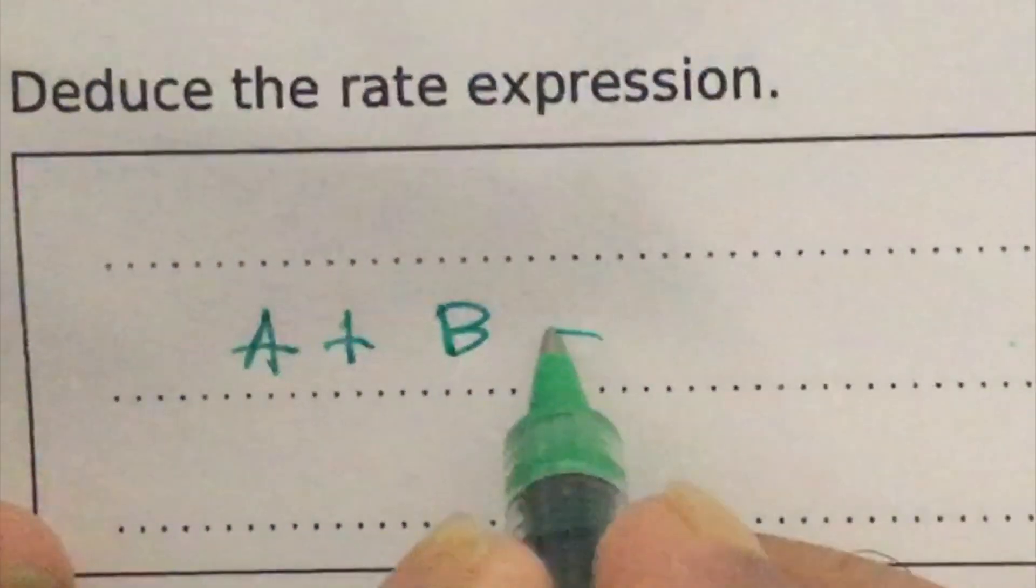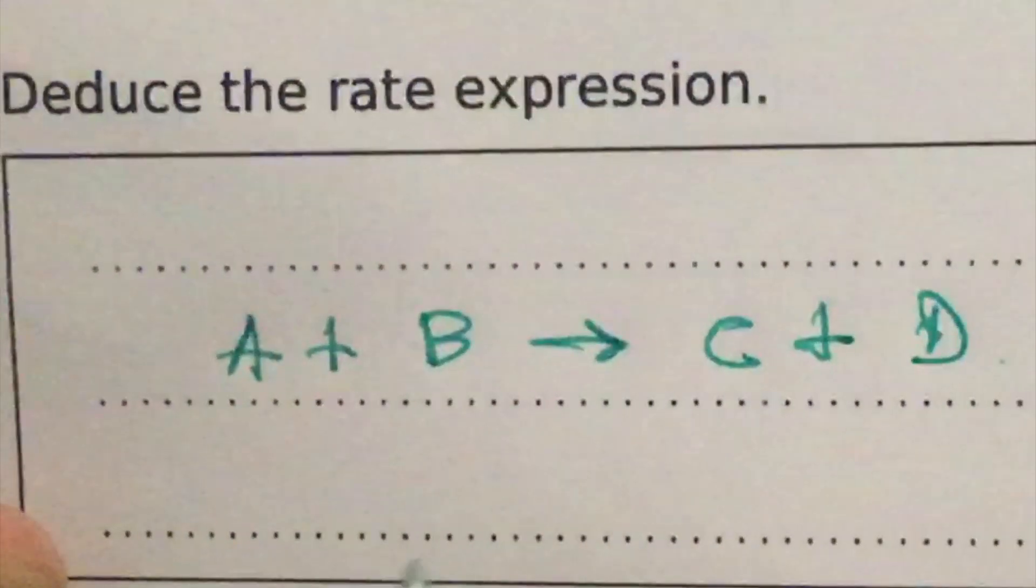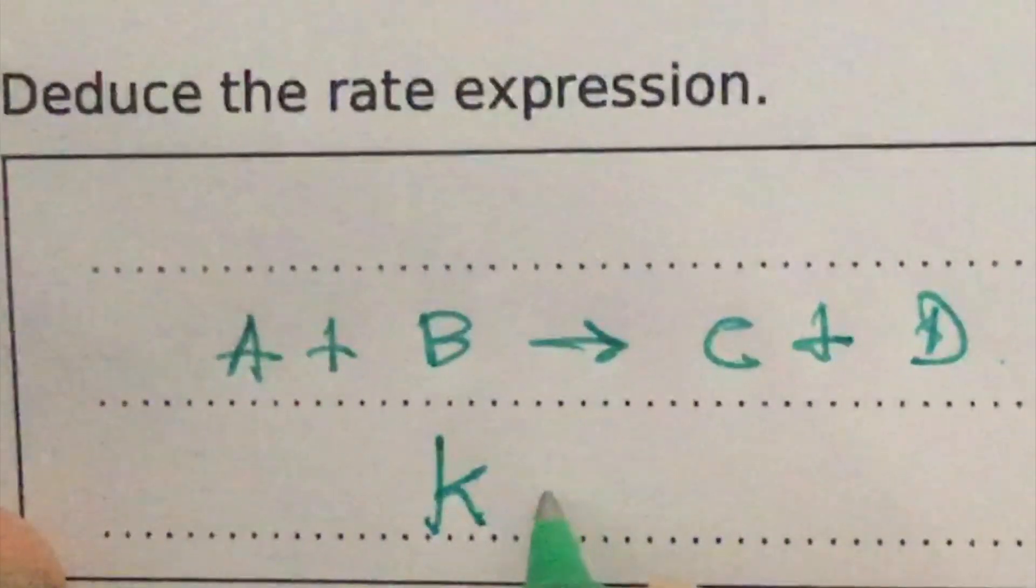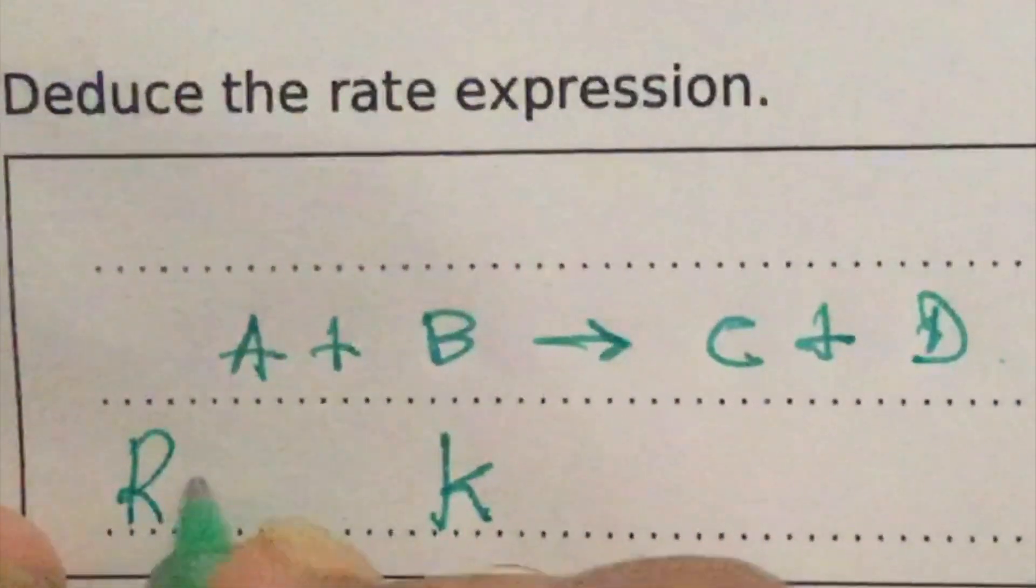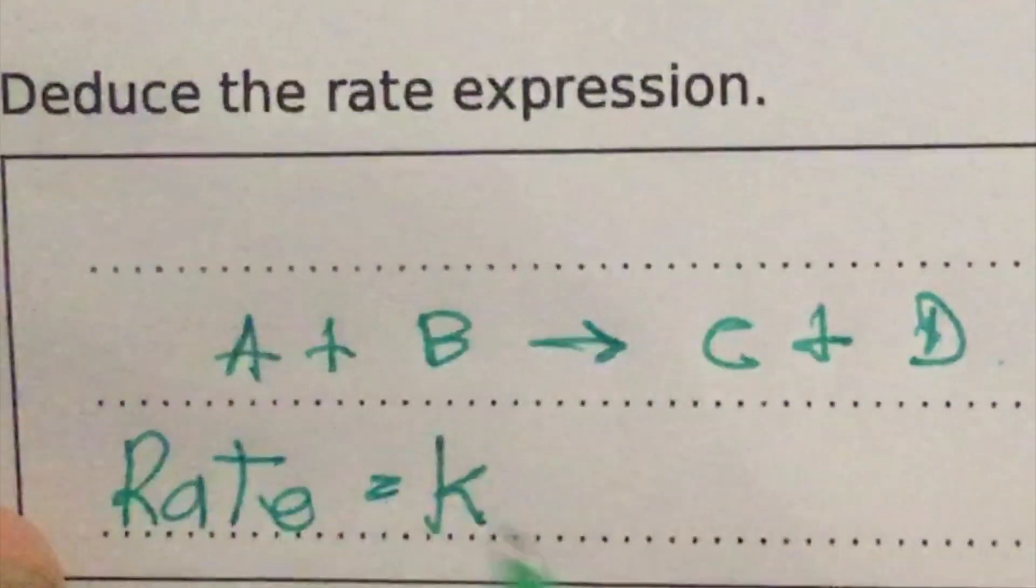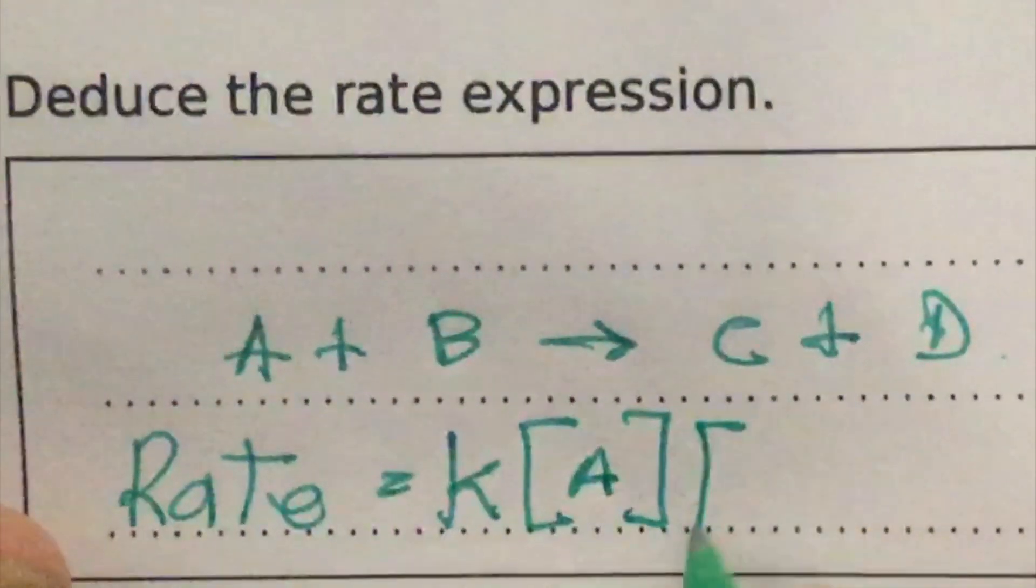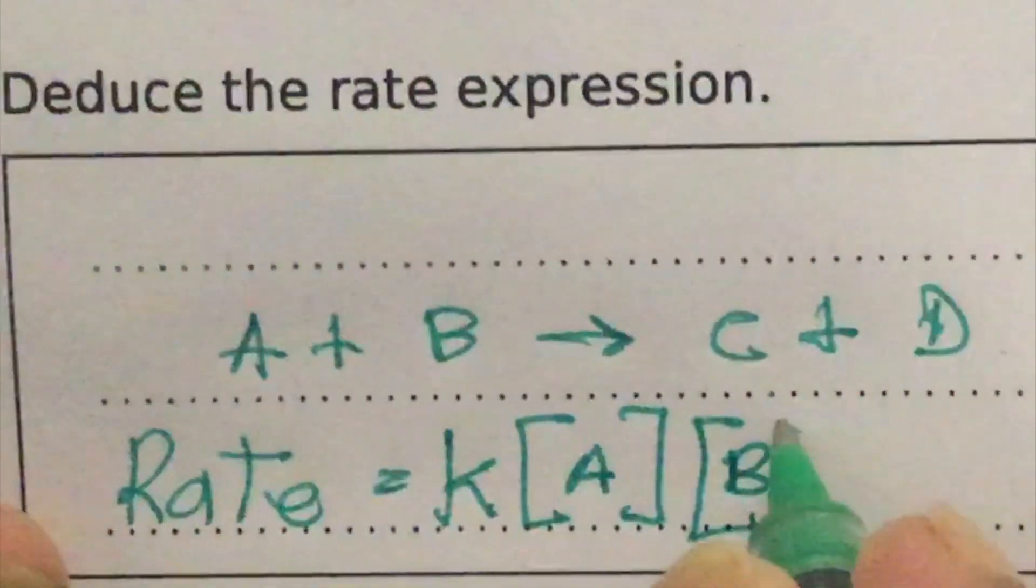to give C plus D, then the rate law or the rate expression would be: rate is equal to k, a constant, multiplied by the concentration of A, the catalyst, multiplied by the concentration of B, the reactant.